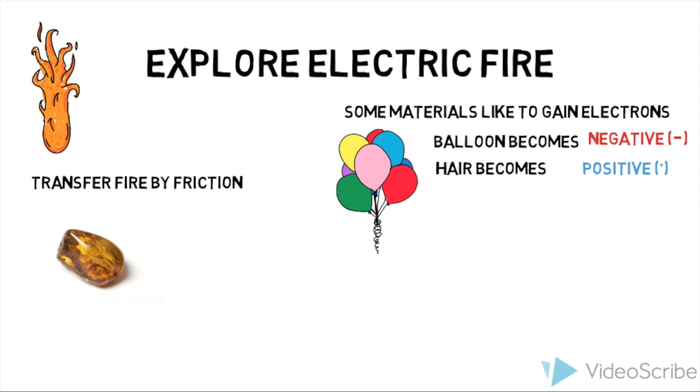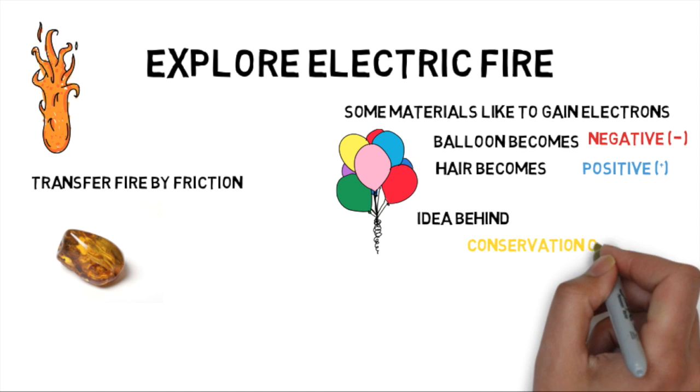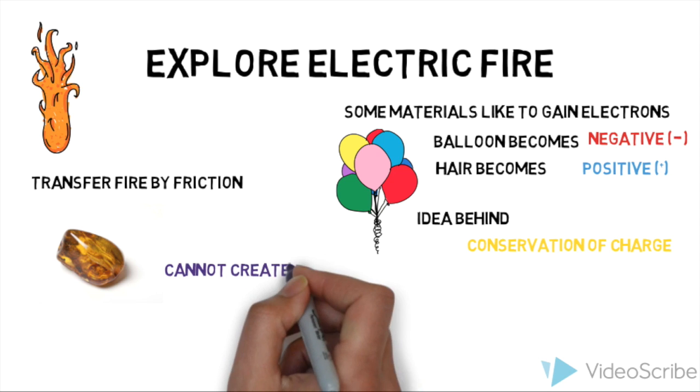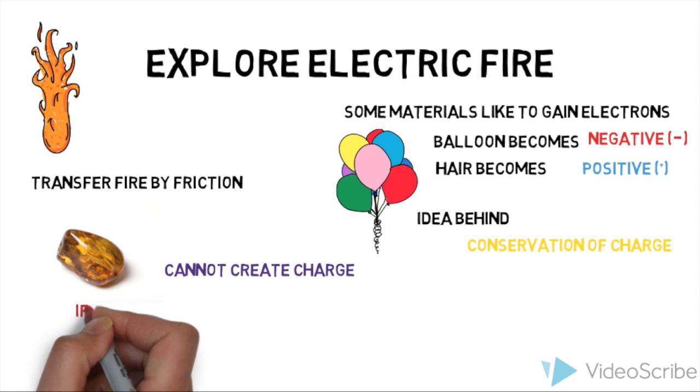Charge cannot be created. If you create plus, you automatically cause minus charge to be created. There are two types of materials, insulators and conductors.